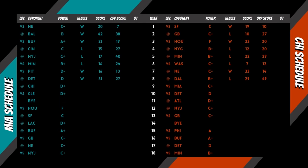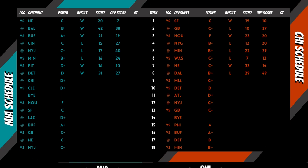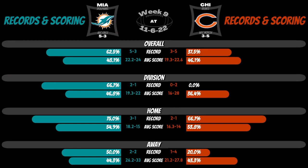Power is derived utilizing record, point differential, opponent record, and opponent's opponent record. 65% of people are visual learners, so content is designed to allow all analytical skill levels the ability to decipher shit tons of data with haste.